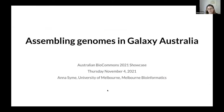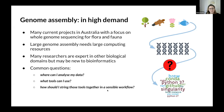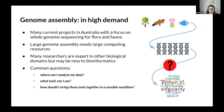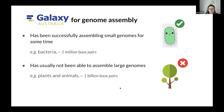I'll be talking about how we've been assembling genomes in Galaxy Australia and some of the detail behind that. There are lots of current genome assembly projects going on both in Australia and internationally — yesterday we heard about the tea tree genome, and we'll hear shortly about the Regent Honeyeater genome. These projects need a lot of computational resources, and it's often difficult for researchers to know where to start. Common questions include: where can I analyse my data, what tools can I use, and how would I string those tools together into a workflow?